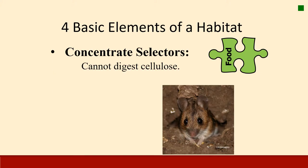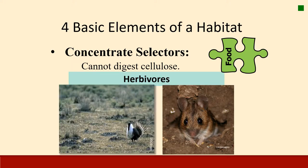Concentrate selectors cannot digest cellulose or have a difficult time using it. These are often our herbivores or plant eaters. They graze and browse vegetation. They get a lot of their energy from simple carbohydrates like sugars and starches by eating roots, berries, seeds, and young shoots, where cellulose is present but maybe not concentrated.